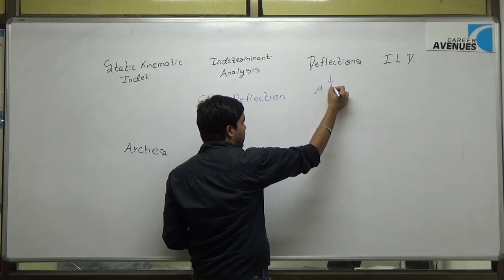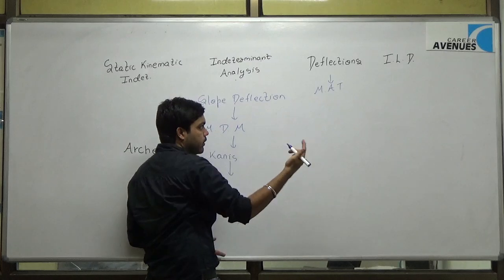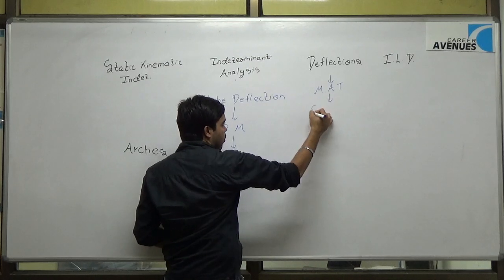the moment area theorem abbreviated as MAT, that is 1 and 2. The second we will see is the conjugate beam method.